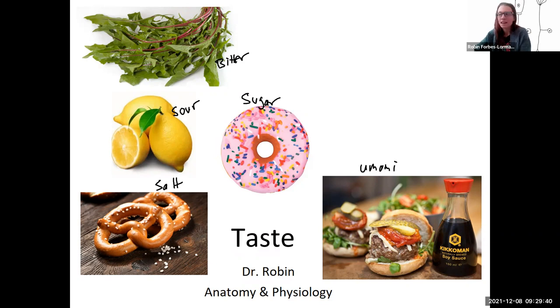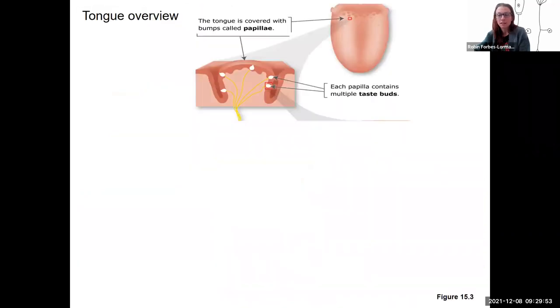That's kind of sensed. And then we won't talk as much about how they're perceived, but they're going to go to the primary gustatory cortex if they are perceived. So let's talk about some tongue anatomy. You know that your tongue is where taste buds are located.